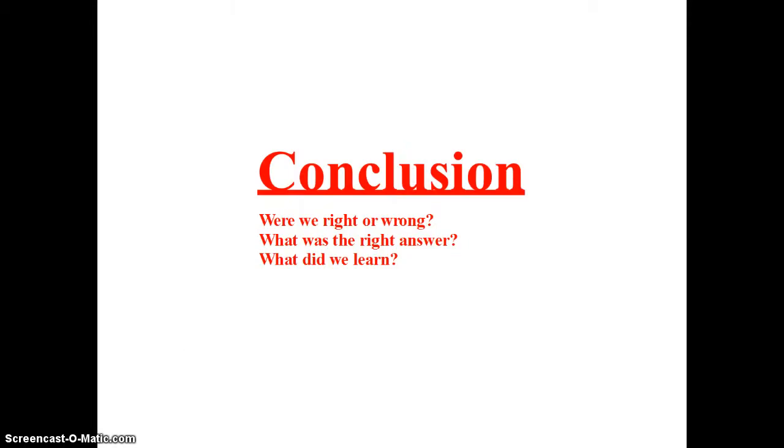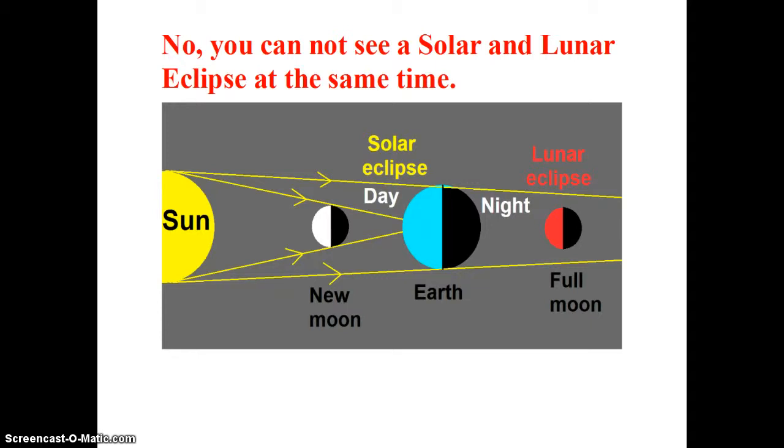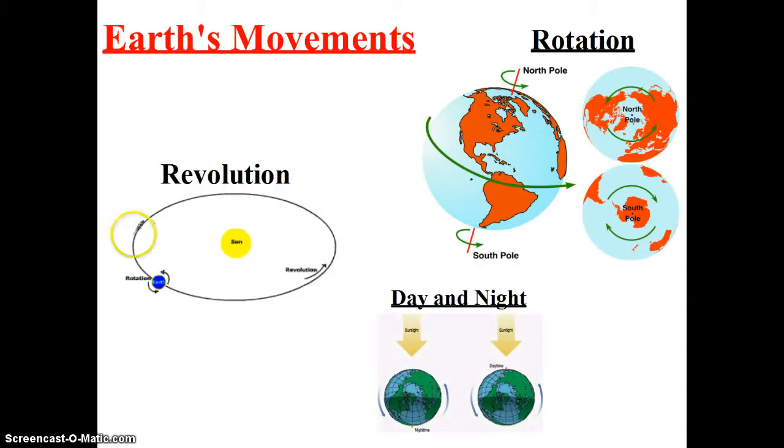In the conclusion, were we right or wrong? Well, no. You cannot see a solar and lunar eclipse at the same time. That wouldn't mean that there'd be two moons and there's just one. So you refer back to your visual section and then you start talking about how a revolution is the movement of the earth around the sun, the movement of the moon around the earth. So a complete revolution. A rotation is a spin on the axis, which causes day and night. Revolution equals year. Rotation equals day. 24 hours, 365 and 1 quarter days, and 24 hours.